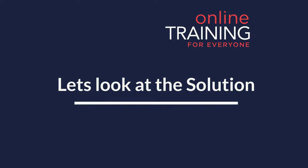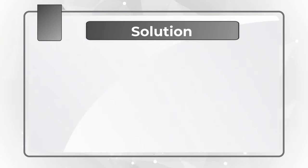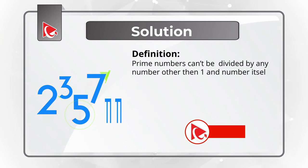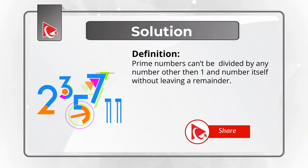Did you solve it? Let's move forward and get to the correct solution together. To solve this challenge, let's start with the definition of prime number. Prime numbers cannot be divided by any number other than 1 and number itself without leaving the remainder.